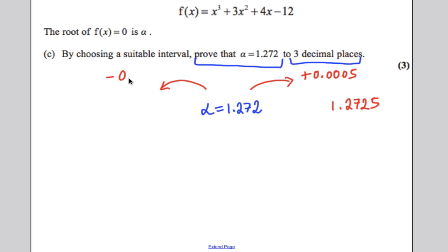And you are going to find its lower bound by subtracting 0.0005 which is 1.2715. If you are not very good with your decimals, which you should be, just make sure you use the calculator there. And what you do is you work out F of 1.2715.